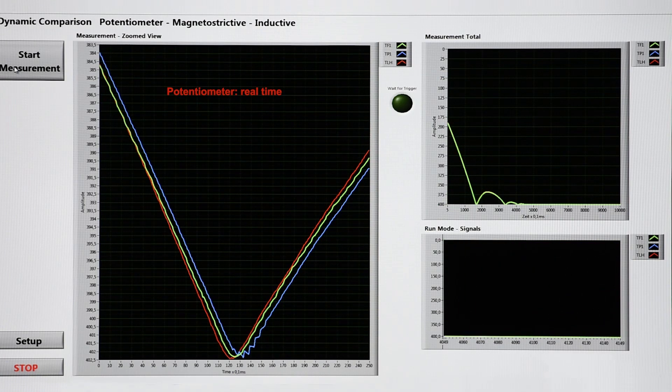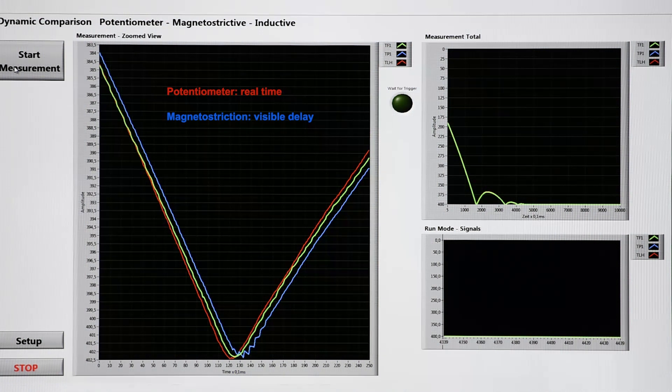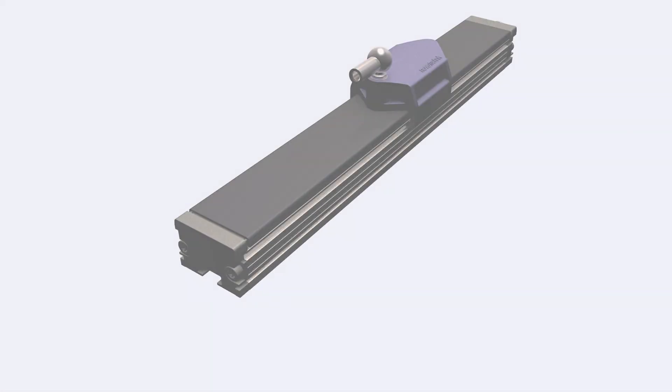The new inductive TF1 series shows an extremely short signal delay, almost equivalent to the potentiometer, especially in comparison to the magnetostrictive signal.